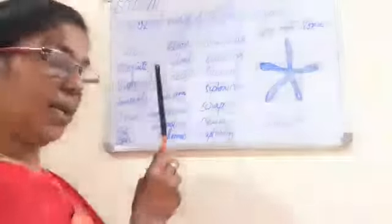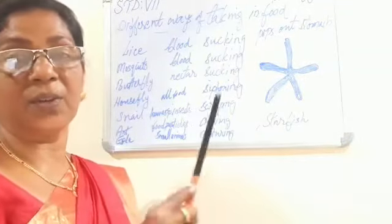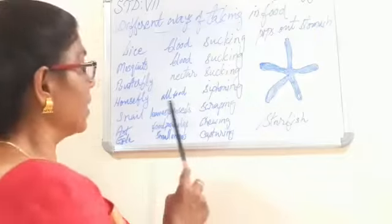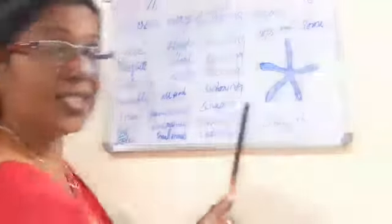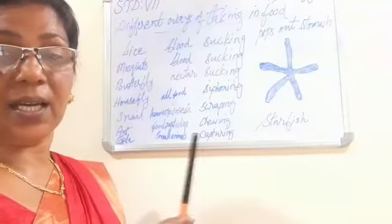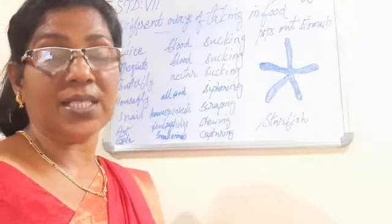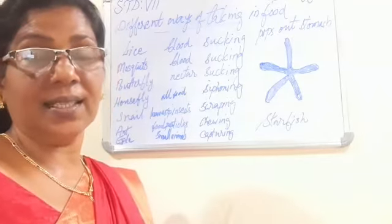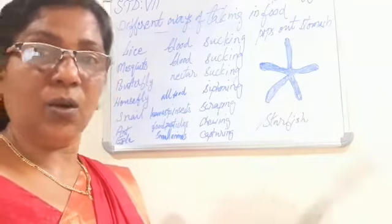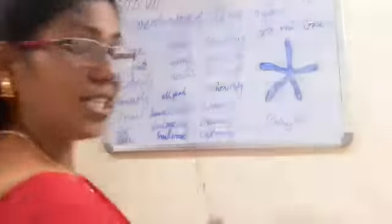A housefly sucks all types of juice from all types of food, and the mode is known as siphoning. Siphoning means the housefly first pours its saliva into the food and then sucks the juice from the plant, animal, or any type of food. So the mode is known as siphoning.